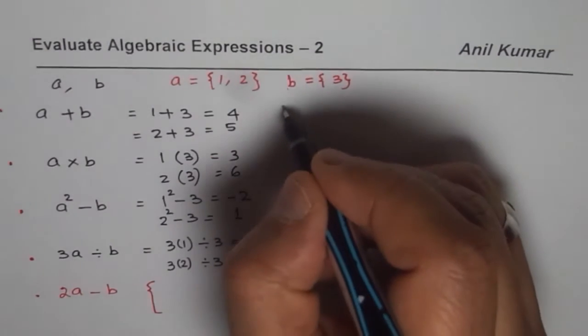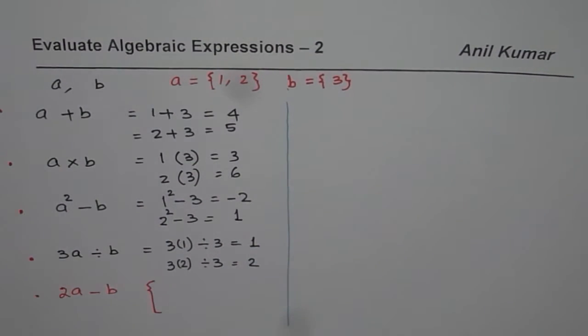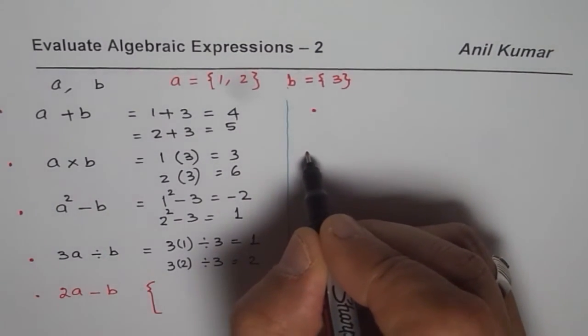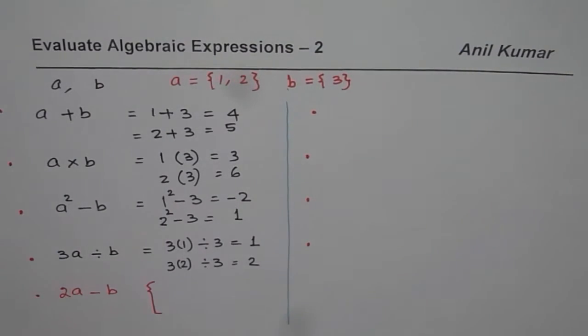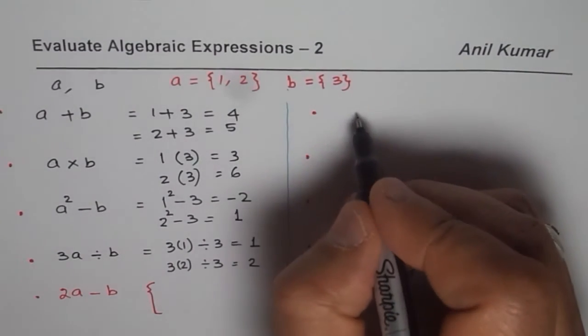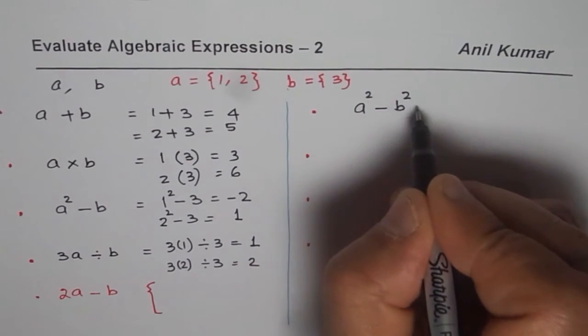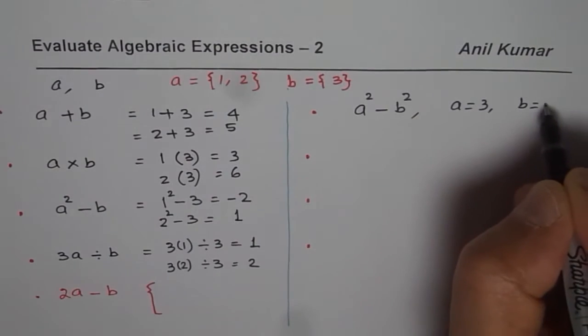So this exercise is for A and B equals to 1 and 2. Now we have some more questions for you. It is just to practice how to evaluate algebraic expressions with different values of A and B. In this case, what I will do is, I will write down the expression and I write down their values later. So you have to evaluate A square minus B square